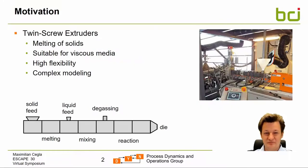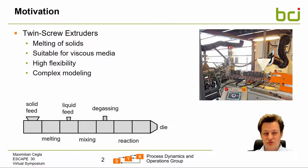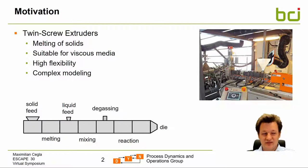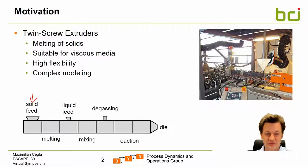Twin screw extruders are widely applied in the field of polymer processing, where they are used to process solid polymer flakes for use in other machinery and to give them new forms, for example by injection molding. The first advantage is that it's possible to melt solids, and it's also suitable to process very viscous media such as polymers with a high molecular weight. It offers a high flexibility, and in the case of reactive extrusion it can be seen as a modular reactor. Solid flakes can be directly fed into the reactor, and liquid side feeds at any position are also possible.